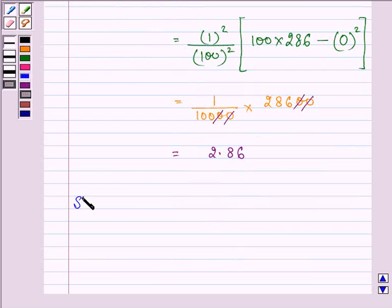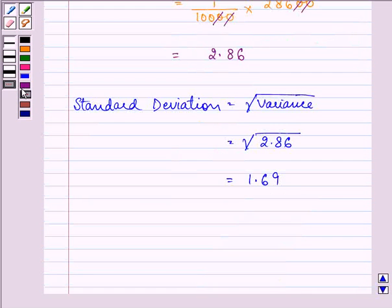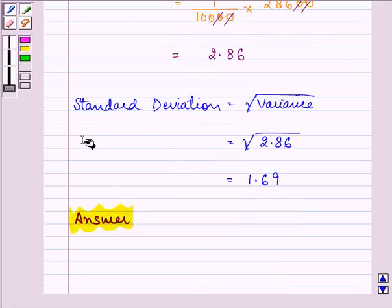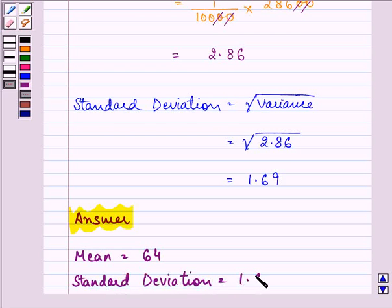Don't forget you need to find out the standard deviation. Standard deviation is under root the variance. Variance is 2.86, so its square root is 1.69.